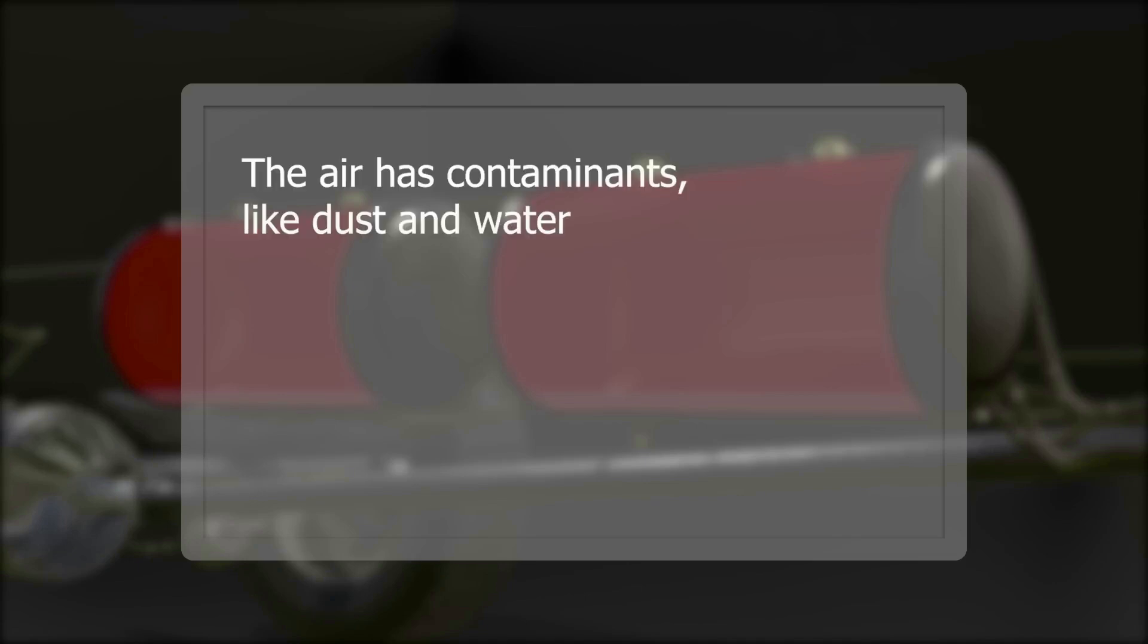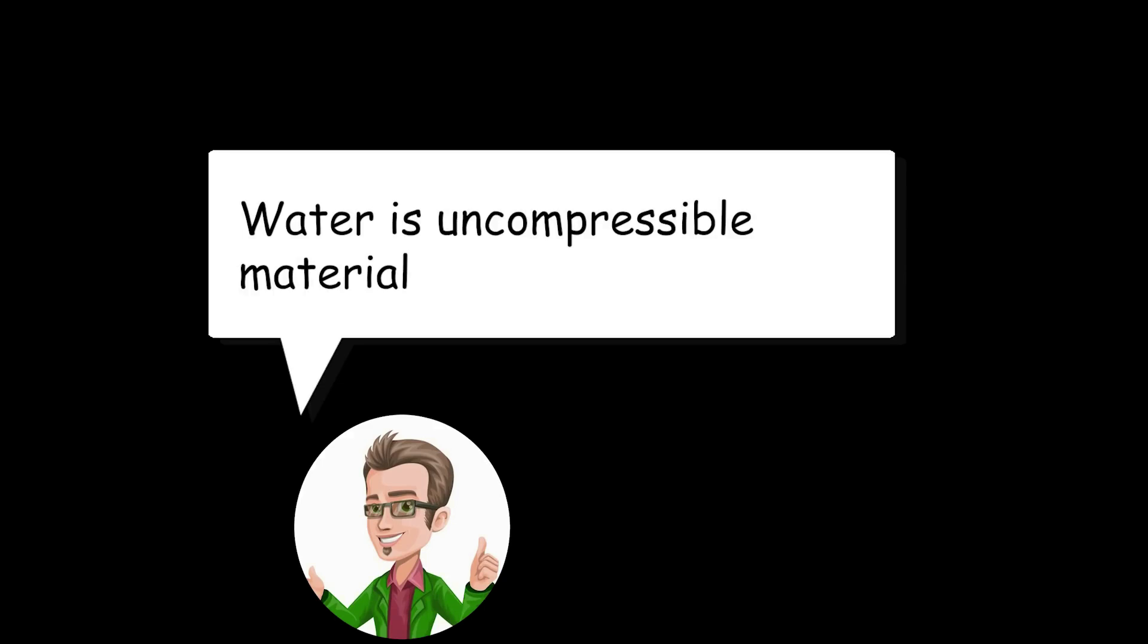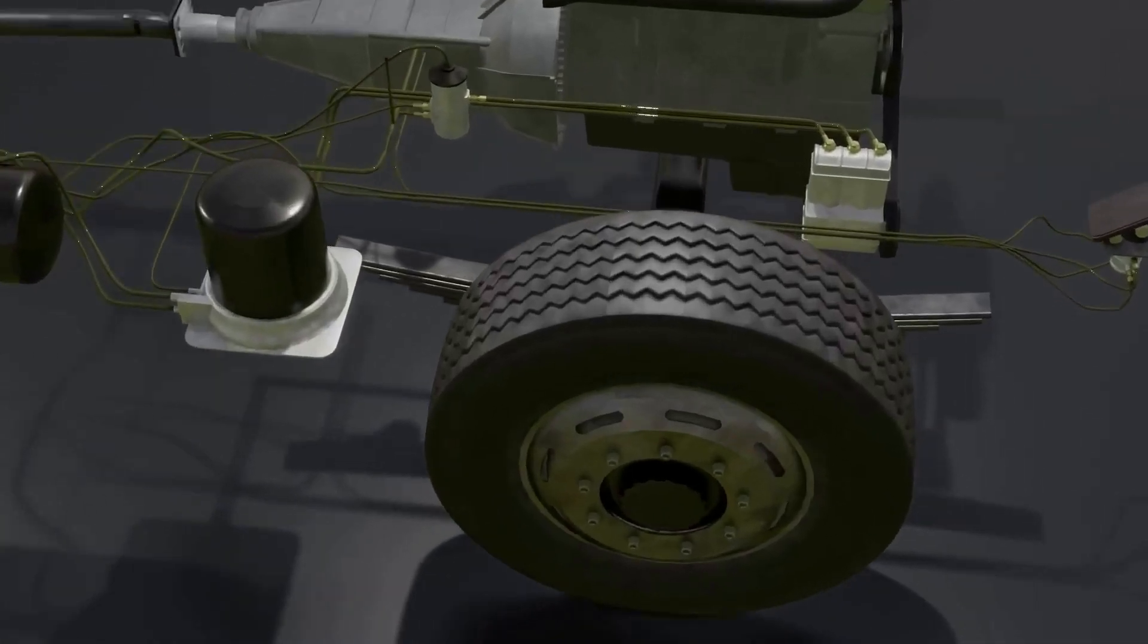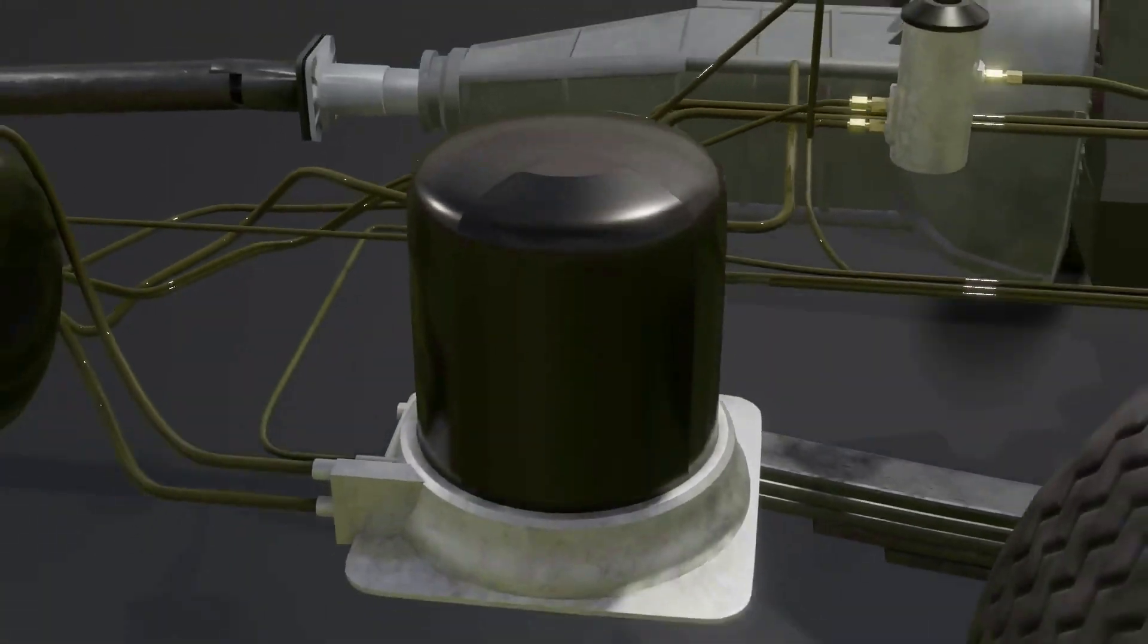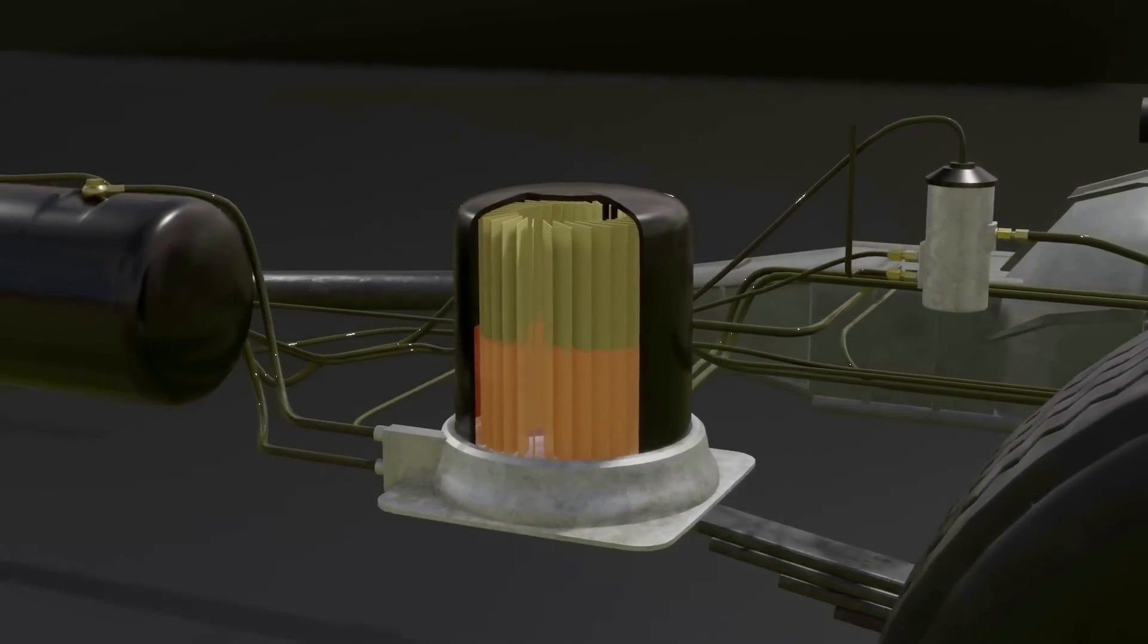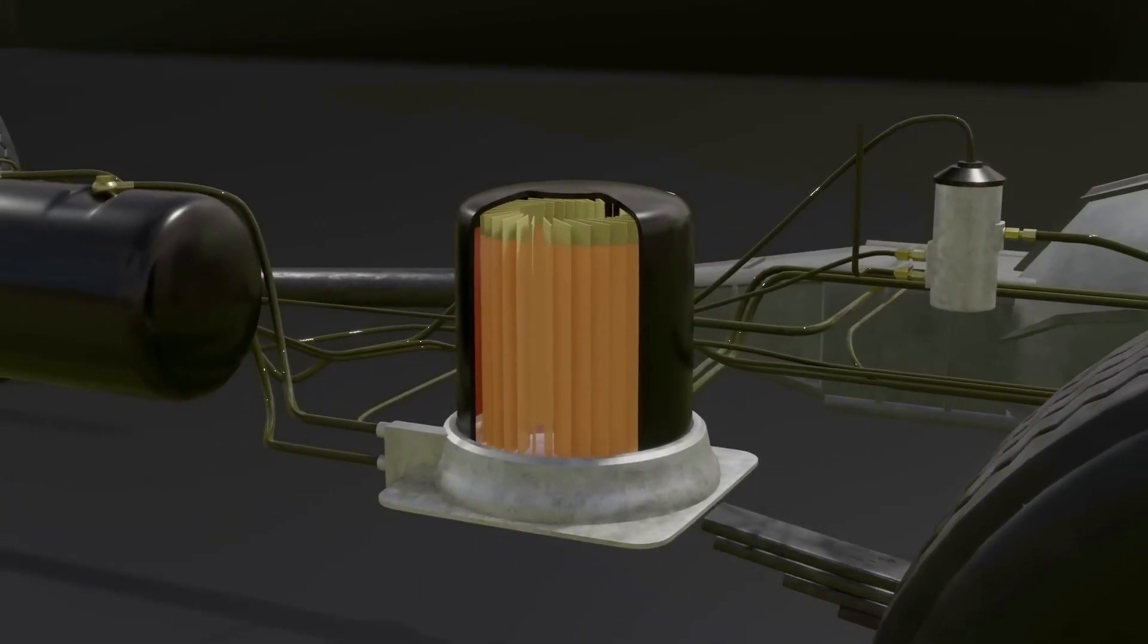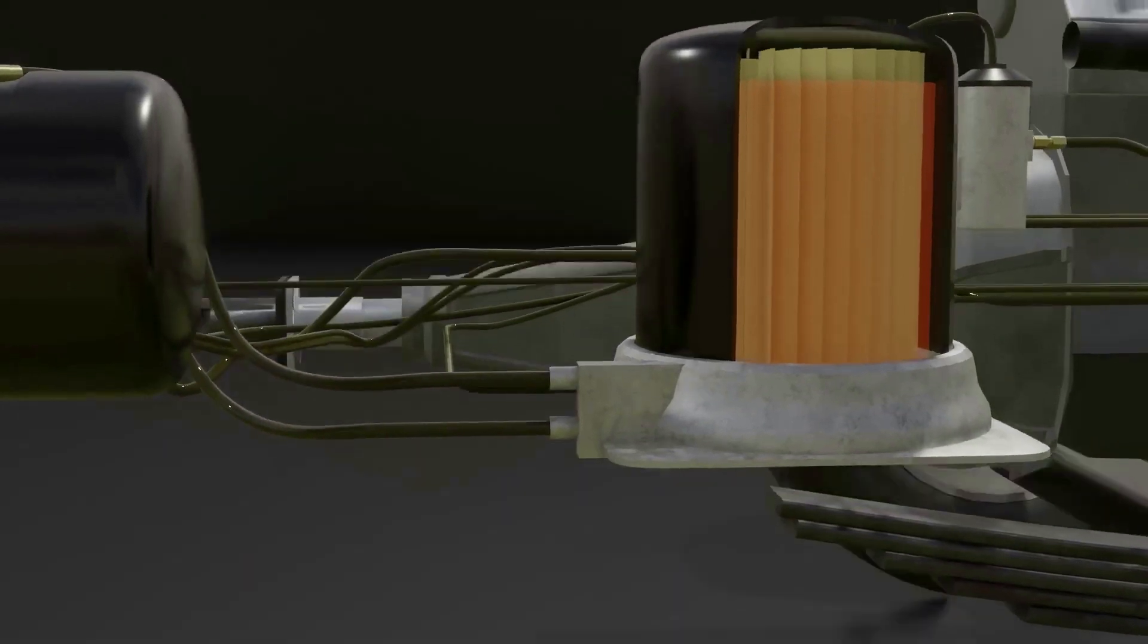But the air that is stored certainly has contaminants, like dust and water. We know that water is an uncompressible material, which means that if this water were to come into the system, it might break the air brake component. To get rid of it, before the pressurized air comes to the air tanks, it will be diverted to the air dryer, which will get rid of the contaminants so that it is free from water. The water will be discarded by a waste channel, and the clean dry air will be shared with the tanks.